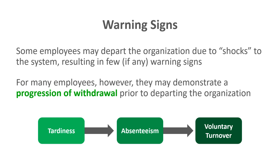We can also think about cognitive withdrawal, where surveys can be really helpful — surveying employees about their levels of job satisfaction, organizational commitment, or even directly about their turnover intentions. Simply having employees respond to a statement like 'In the next six months, I plan on quitting the organization' with a strongly disagree to strongly agree format can help anticipate whether a large number of employees might be thinking about leaving — all useful warning signs for retention efforts.